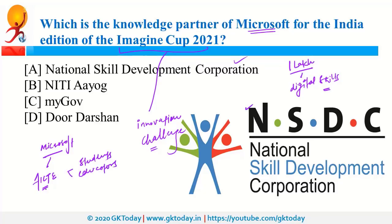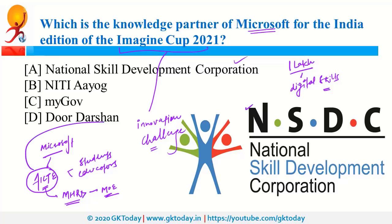Microsoft also partnered with AICTE to empower students and educators. AICTE stands for All India Council for Technical Education and it is under MHRD, that is Ministry of Human Resources Development. MHRD is now renamed as MOE, that is Ministry of Education. Recently, AICTE was also in news because of the Tulip Scheme. Answer in the comment box: what is the Tulip Scheme and what is the core objective of this initiative?